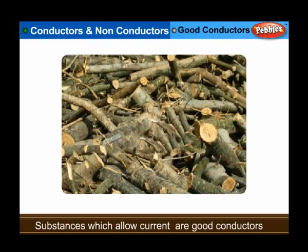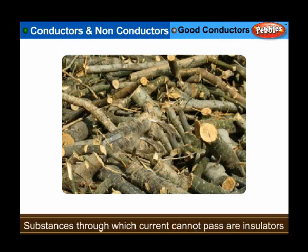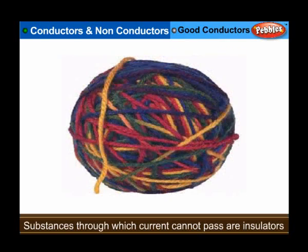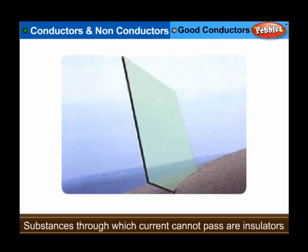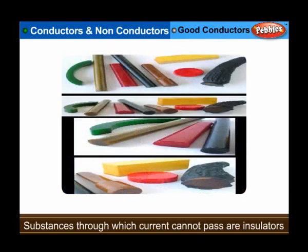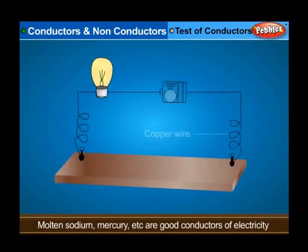Substances through which electric current cannot pass are called bad conductors, non-conductors, or insulators. Examples include wood, wool, cloth, glass, bakelite, etc.